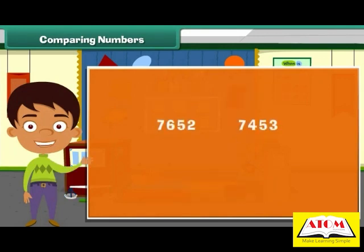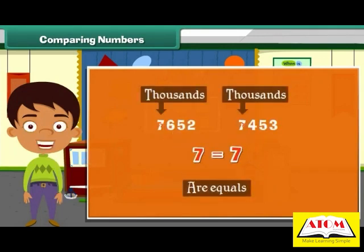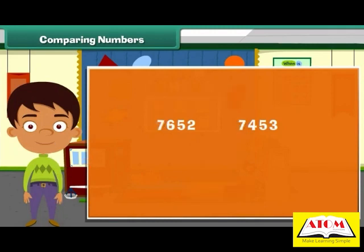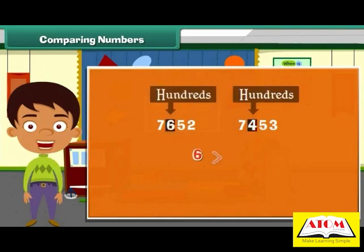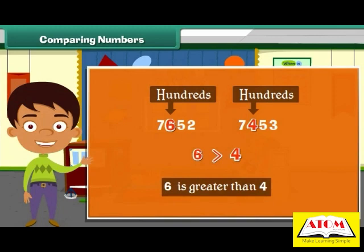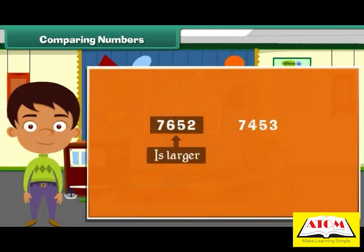However, if the digits at the thousands place in the two numbers are the same, we compare the digits at the hundreds place. The number that has a greater digit at the hundreds place is the larger of the two. For example, let us compare 7,652 and 7,453. Since the digit 7 at the thousands place is the same in both numbers, we compare 6 and 4. Since 6 is greater than 4, we can say that 7,652 is larger.